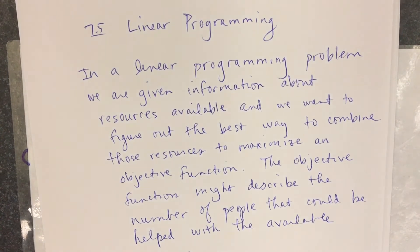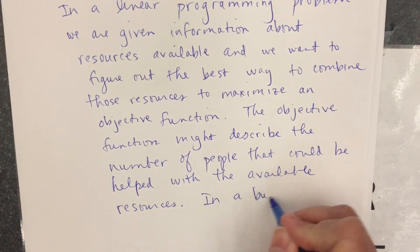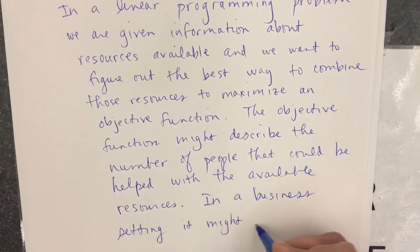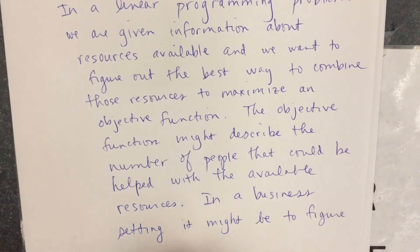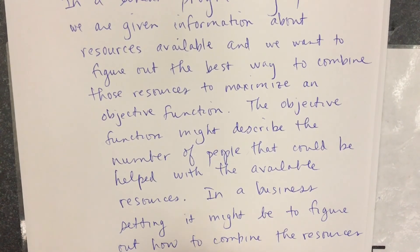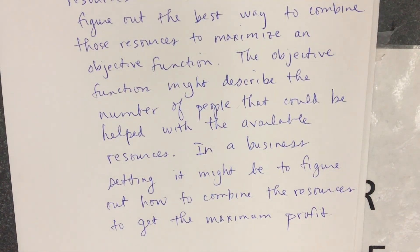It might be that we're going into business, and if you're going to start up a business, what are you interested in? You're interested in the bottom line — you want the maximum amount of money. So in a business setting, it might be to figure out how to combine the resources to get the maximum profit. Sometimes you'll hear me call the objective function the profit function.